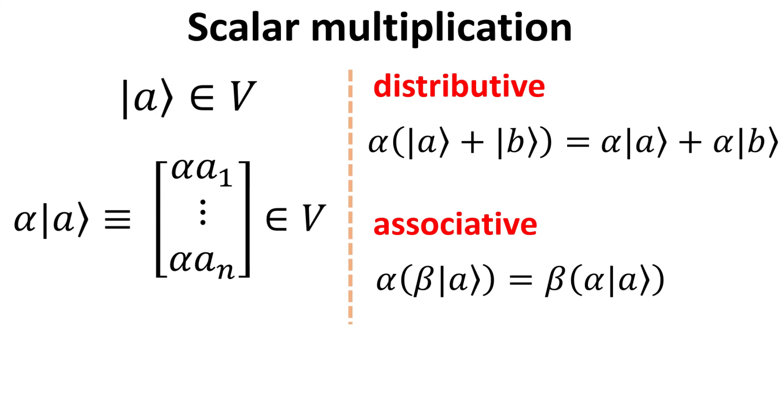A vector multiplied by a scalar alpha is defined by multiplying each element of the column vector with alpha. One can then show that these scalar multiplication has to be distributive, such that the results are the same if you do the vector addition first then multiplying with alpha, or multiplying each vector by alpha then do the addition.